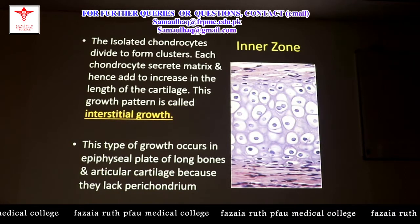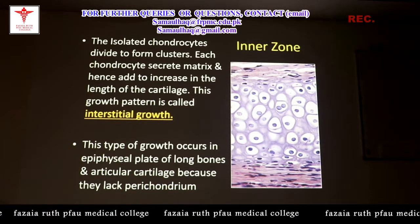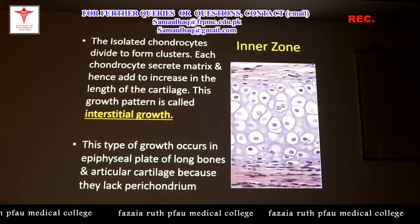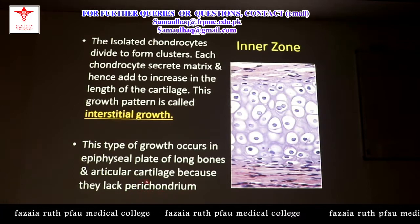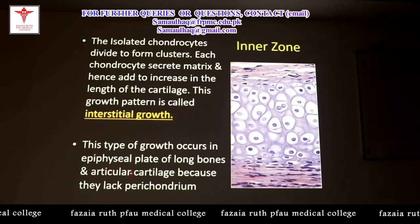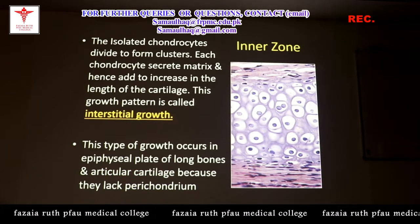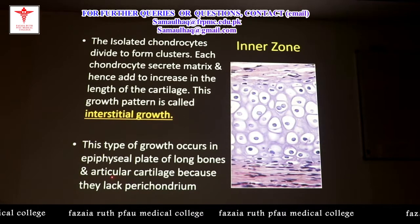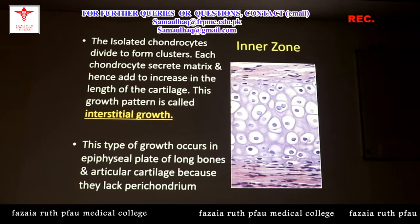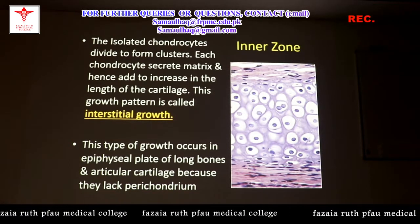Hyaline cartilage is covered by a layer known as perichondrium. However, where two bones join together at articular surfaces, the cartilage — mainly hyaline — does not have any perichondrium. In the rest of the body where hyaline cartilage is present, it is covered by perichondrium.